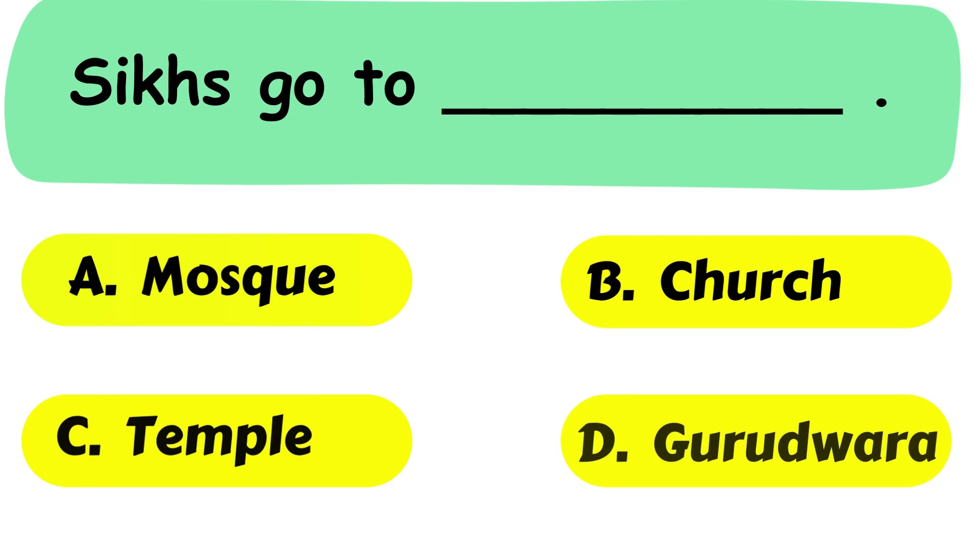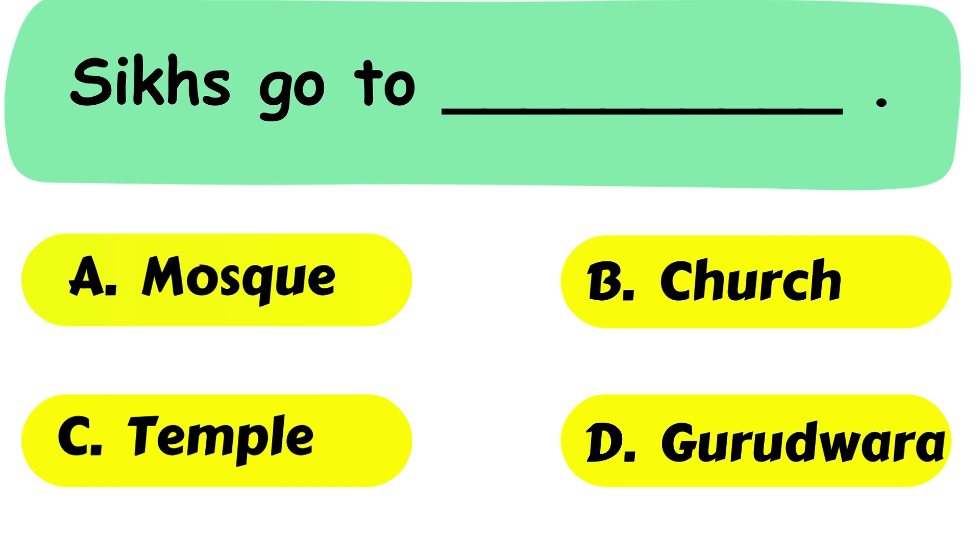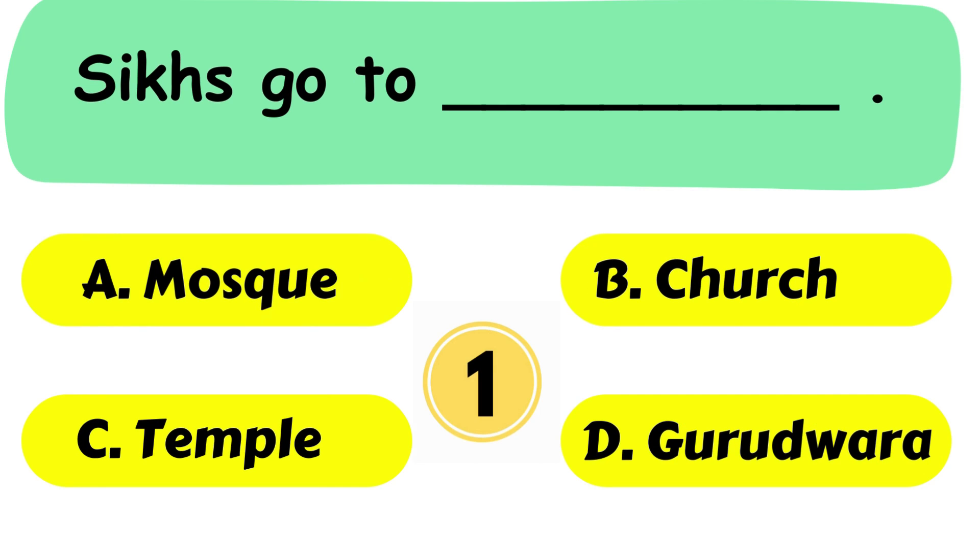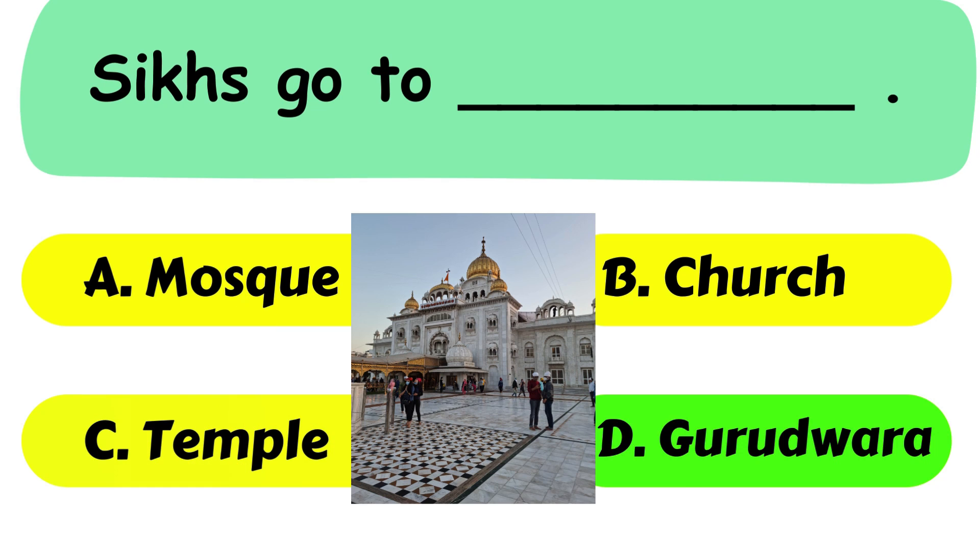Question No. 20. Sikhs go to dash. A. Mosque. B. Church. C. Temple. Or D. Gurudwara. The correct answer is option D. Gurudwara.